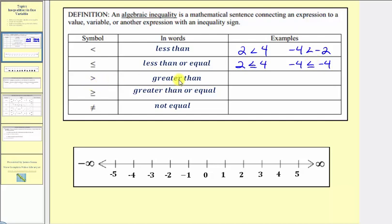Next we have the greater than symbol. If two is less than four, then four is greater than two. And if negative four is less than negative two, then negative two is greater than negative four. On the number line, negative two is to the right of negative four, confirming negative two is greater than negative four. In both cases, the inequality symbol points toward the smaller value and opens toward the larger value.